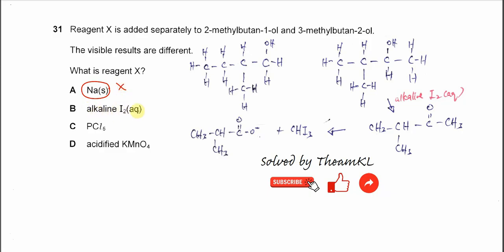Answer B, we'll discuss further. For PCl5, it will react with the OH here. So you substitute this OH and form this haloalkane. So the observations for these two will be the same. It will form HCl, so it's a white fume. So PCl5 is not the answer.